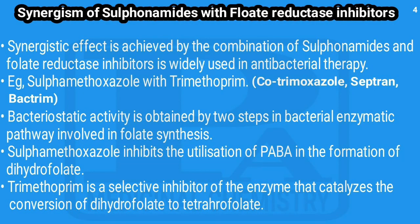By combining sulfonamides with folate reductase inhibitors we get a synergistic effect used in antibacterial therapy. The example is sulfamethoxazole combined with trimethoprim, called cotrimoxazole, septrin, or bactrim, giving bacteriostatic activity. Sulfamethoxazole inhibits the utilization of PABA in the formation of dihydrofolic acid due to structural similarity with PABA, while trimethoprim inhibits the enzyme dihydrofolate reductase, which converts dihydrofolate into tetrahydrofolate.